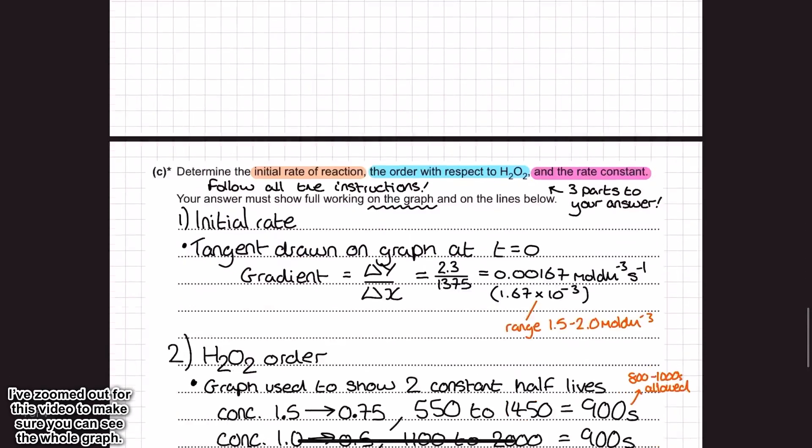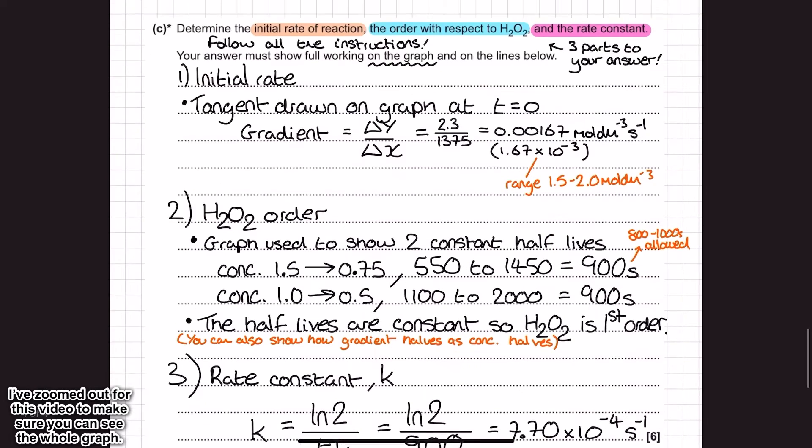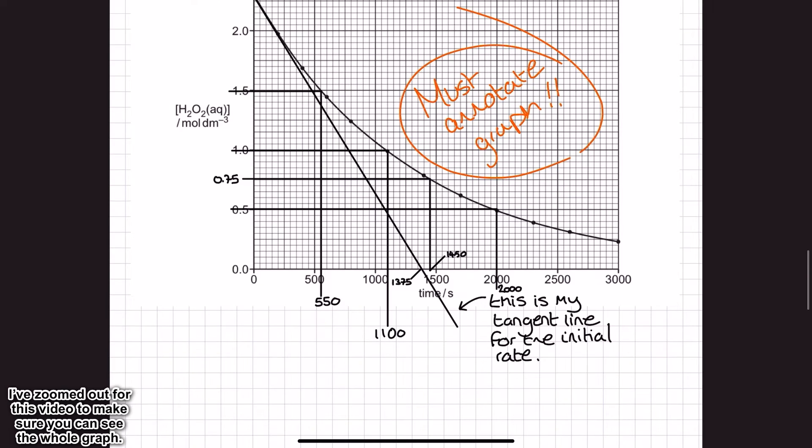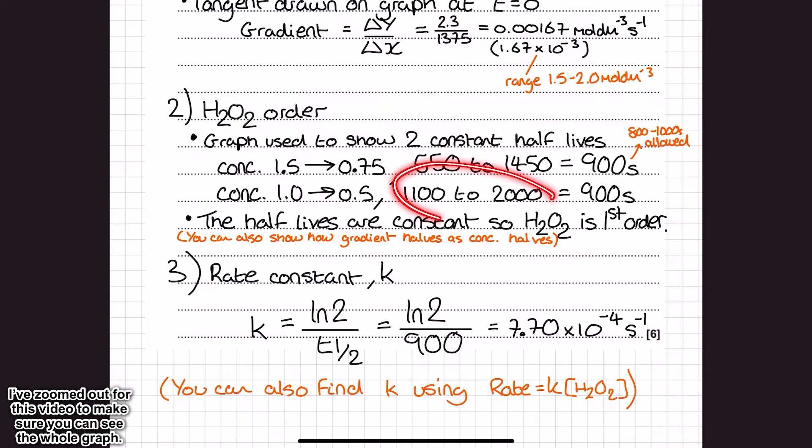Now what I do to find the half-life is I look at the difference between those two numbers. And so the difference here is 900 seconds. Then I do the same thing again, but for two other concentrations. So a nice obvious one here is to go for 1 and then 0.5, which is half of that. So I go from 1 out to the line of best fit, not the tangent I did before, and then I go all the way down here and I've got 1,100 just there. And then I do 0.5 out to the line of best fit, go right the way down here, and it's a nice little perfect 2,000 there. And then I look at the difference between those two numbers. And there we go. That is also 900 seconds.